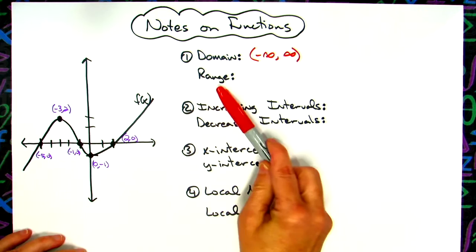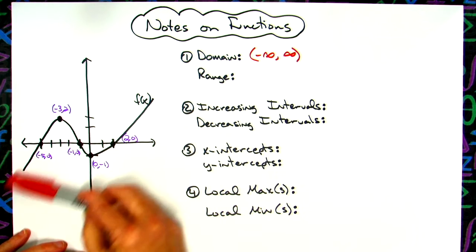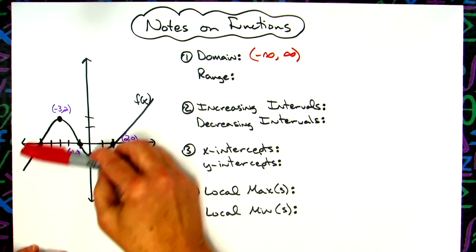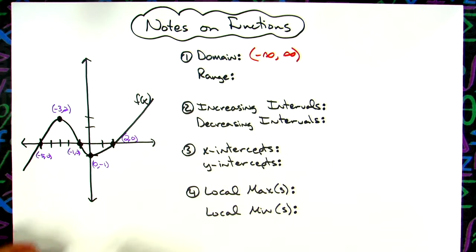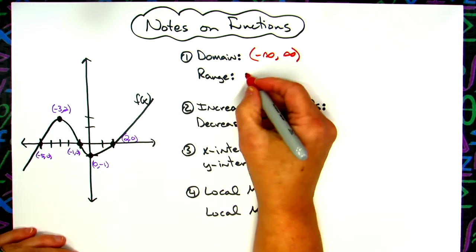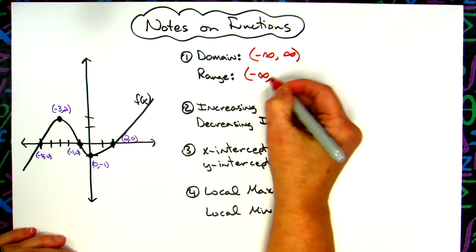Same thing with the range. This portion of the graph goes down forever and ever. It is smooth and continuous, and then this part of the graph goes up forever and ever and ever. So again, my range is negative infinity to positive infinity.